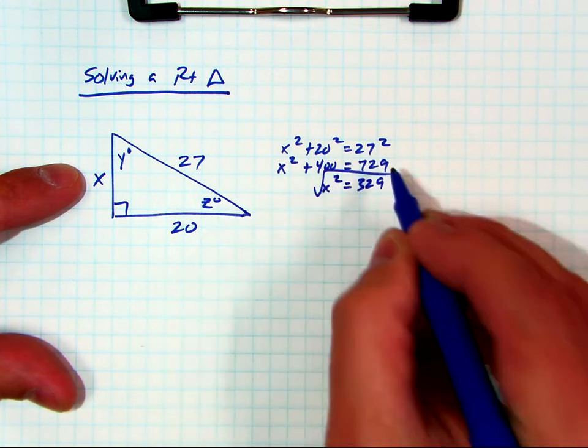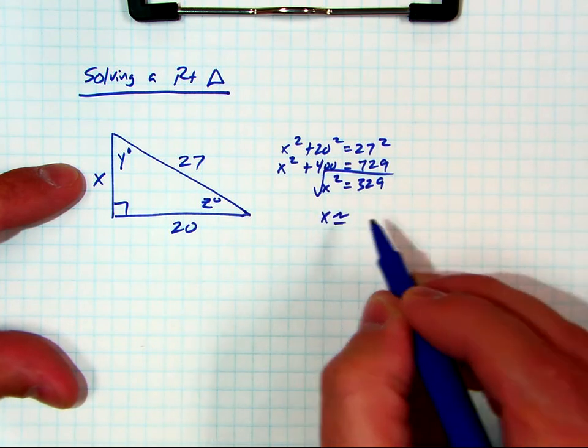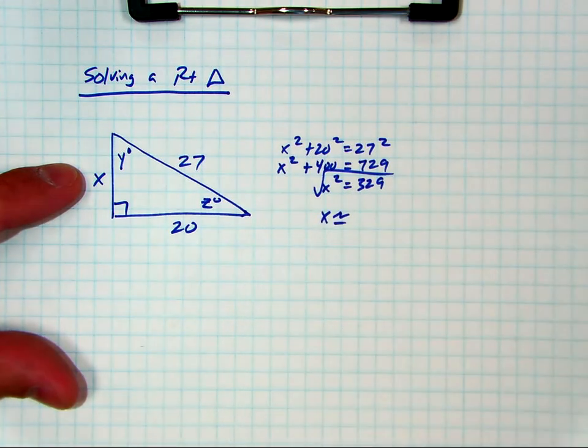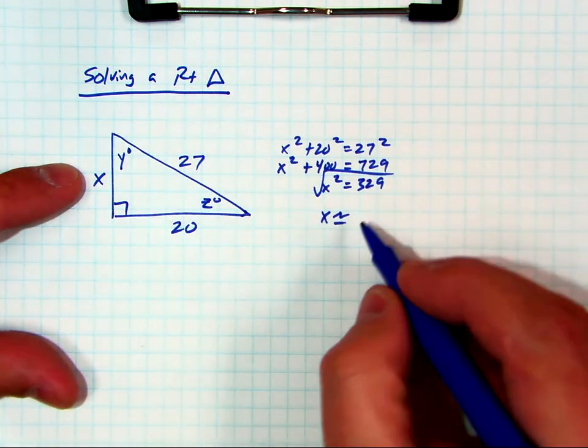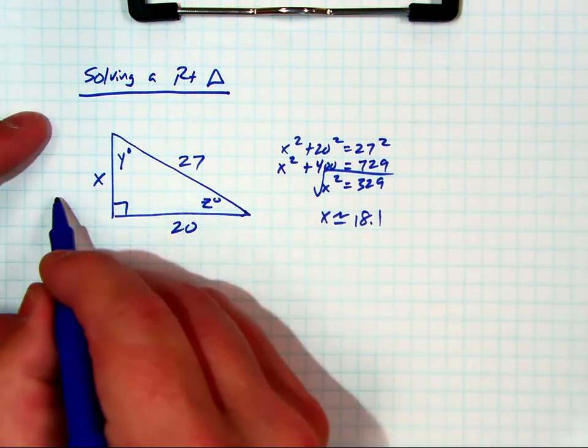And square root. What's the square root of 329, please? 18.1. Everybody agree? Okay. I have students help me on the calculator, so that's good enough. So this is going to be 18.1.